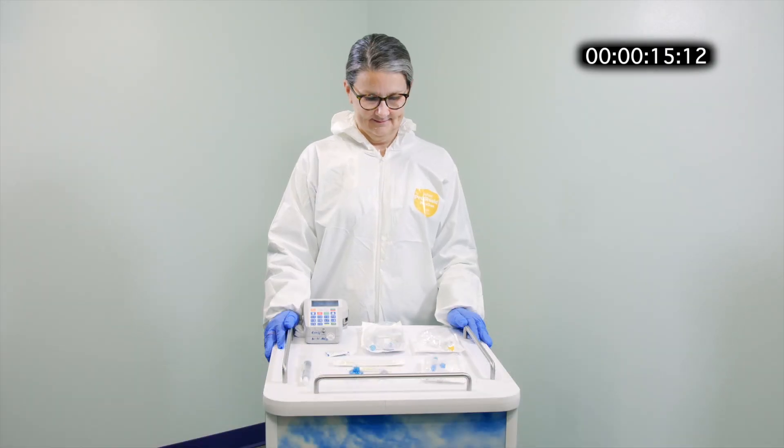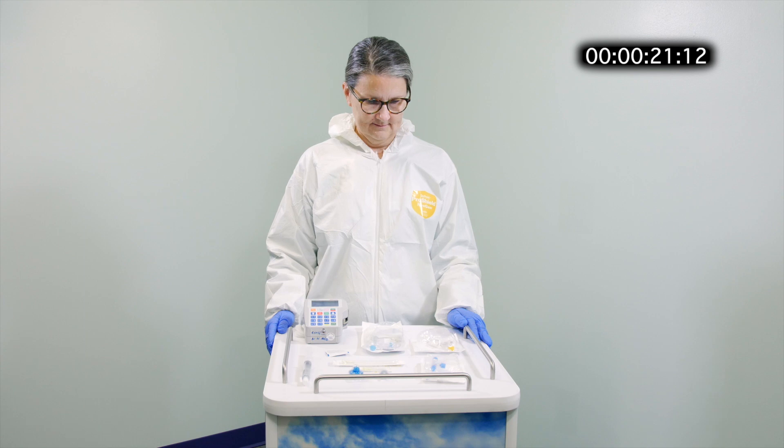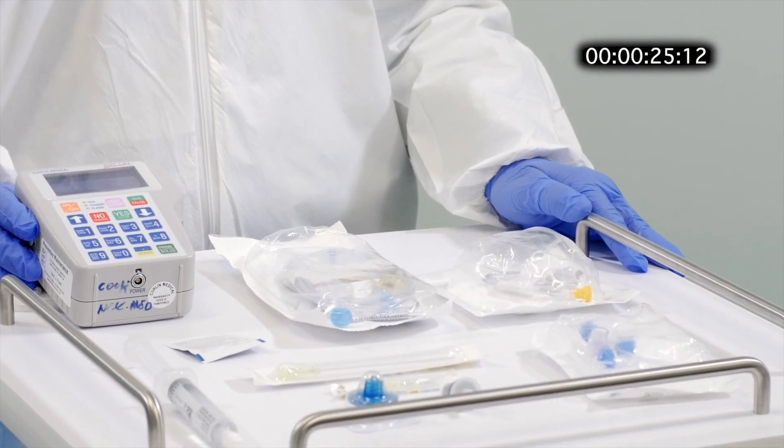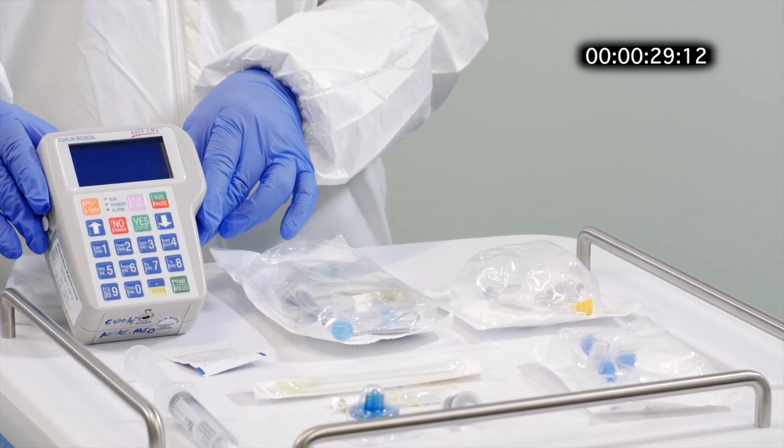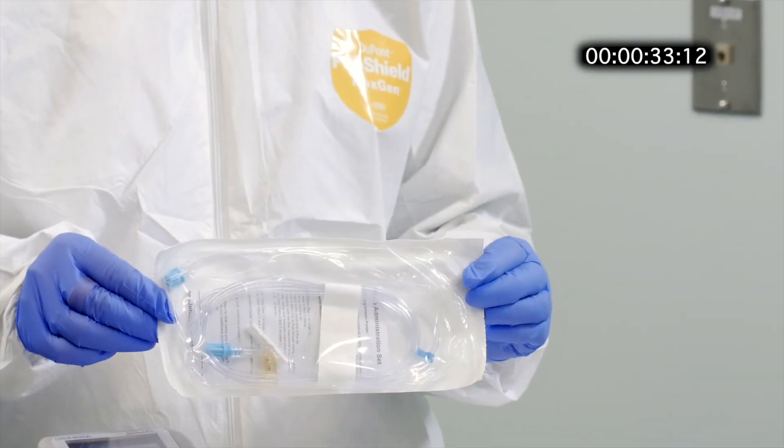These are the components to perform the Iodan 131 MIBG therapy using the Curlin 6000 Infusion Pump Set. All these items are off the shelf from various vendors with the exception of the Curlin Pump and the 86-inch Infusion Set which can only be obtained from Curlin.